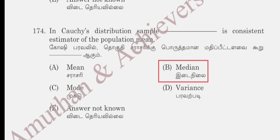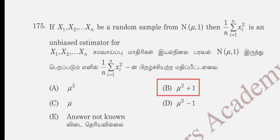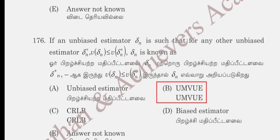As per unit number 4, question 174: in the Cauchy distribution, the sample median is a consistent estimator of the population — options are median, mode, and variance. The sampling median is the correct answer. Question 175: if x1, x2, ..., xn is a random sample from N(mu, sigma²), then (1/n) Σ xi² is an unbiased estimator for: option A mu², option B mu² + 1, option C mu, option D mu² − 1. Option B, mu² + 1, is correct. Question 176: an unbiased estimator sigma_n such that V(sigma_n) ≤ V(sigma_n*) for any other unbiased estimator sigma_n* is known as the uniformly minimum variance unbiased estimator (UMVUE). Option B is correct.